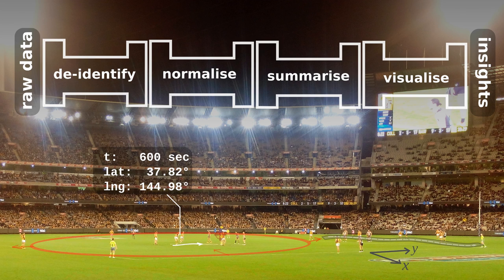I've found that representing the team formation as a point cloud allows us to capture the player formations in a way that obscures the identity of individual players whenever two players cross paths, while still preserving the ability to analyse the team as a whole.